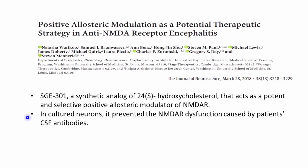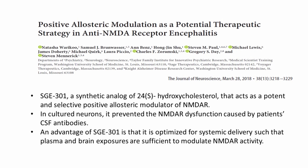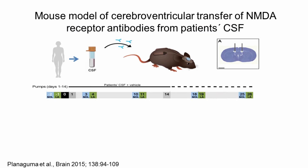In cultures of neurons, it prevented the NMDAR receptor dysfunction caused by patient CSF antibodies. In addition, an advantage of this drug is that it is optimized for systemic delivery, such that plasma and brain exposures are sufficient to modulate NMDAR receptor activity.